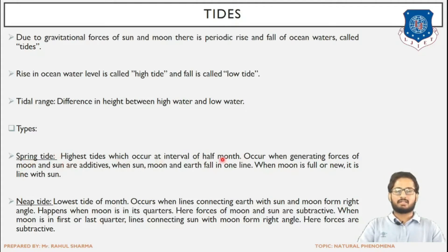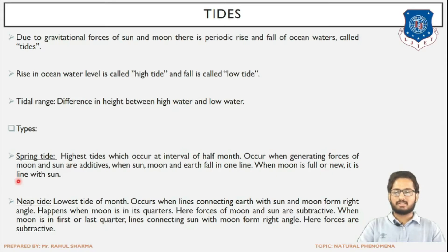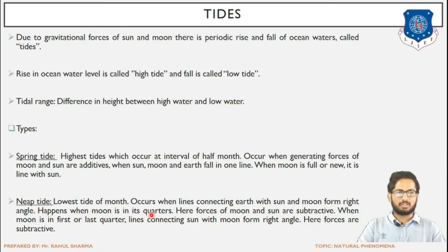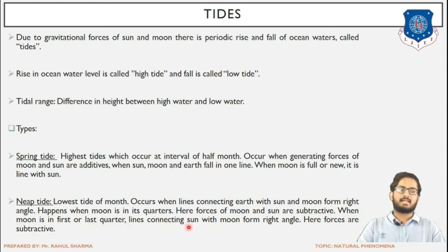The lowest tides of the month — neap tides — occur when the line connecting Earth with sun and moon forms a right angle, that is perpendicular. This happens when the moon is in its first or third quarter. The forces are subtractive at that point. The highest tides — spring tides — occur at intervals of half a month, that is in succession of 15 days, when the generating forces of moon and sun are additive and the sun, moon and Earth fall in the same line.